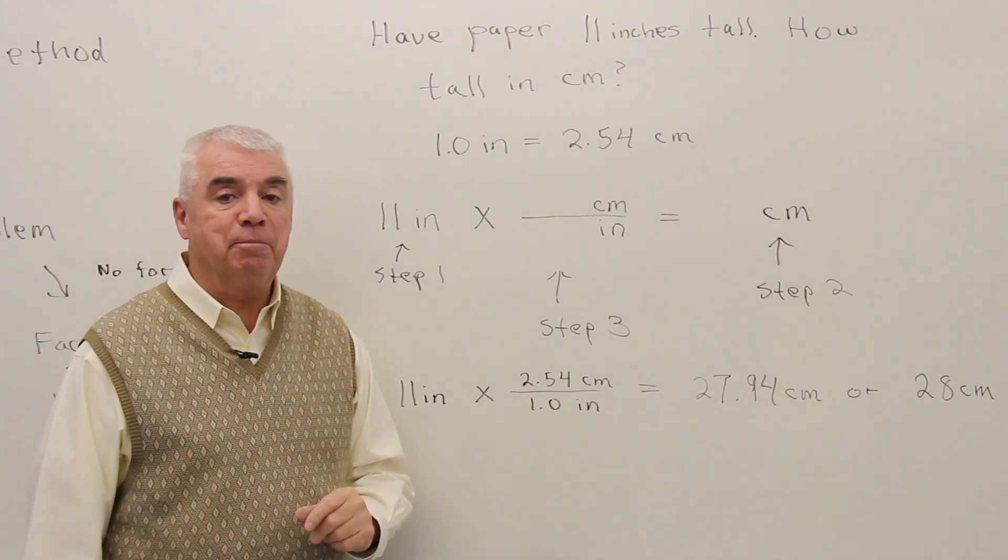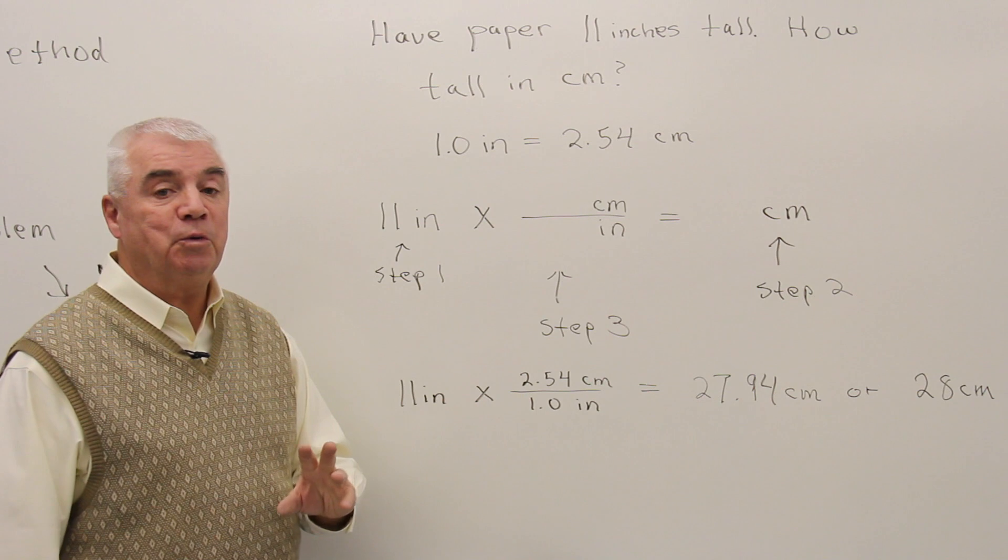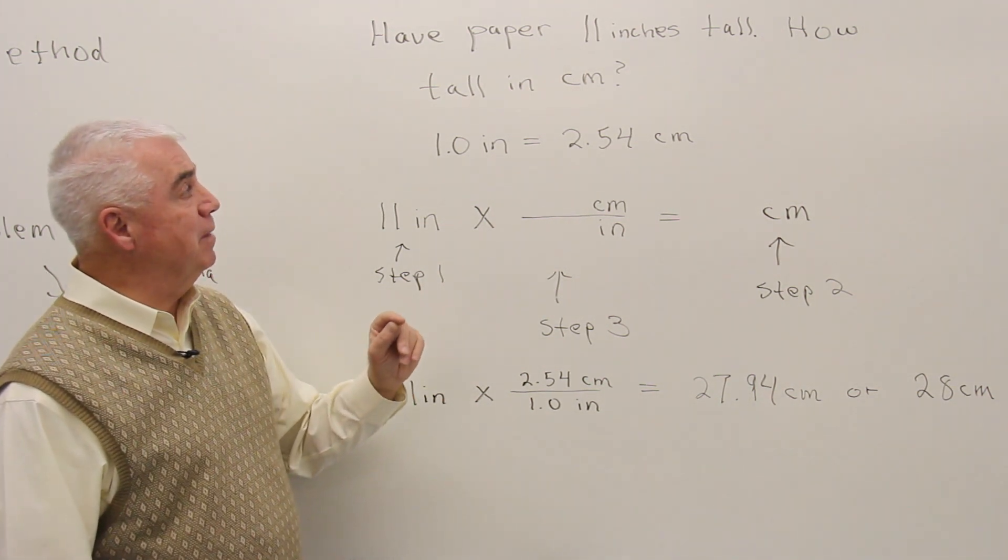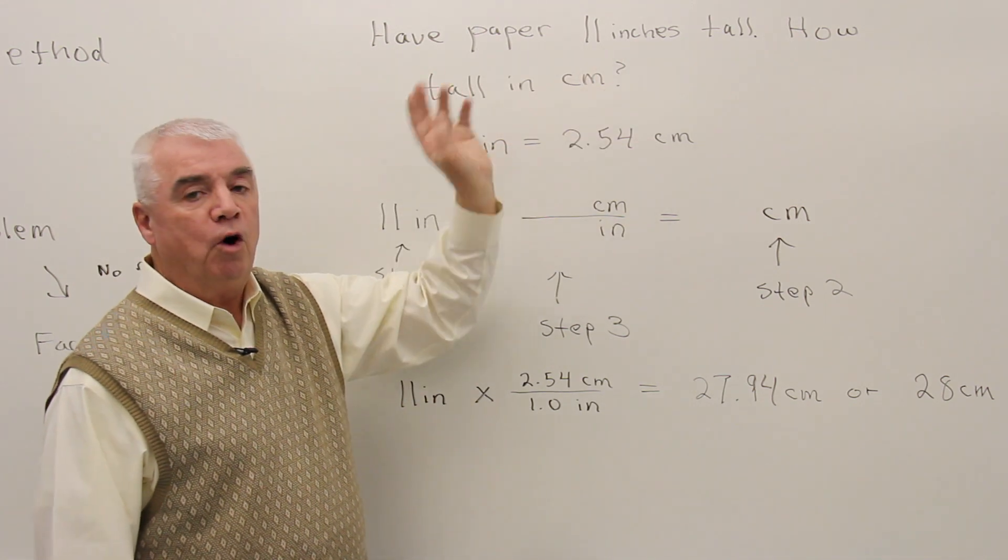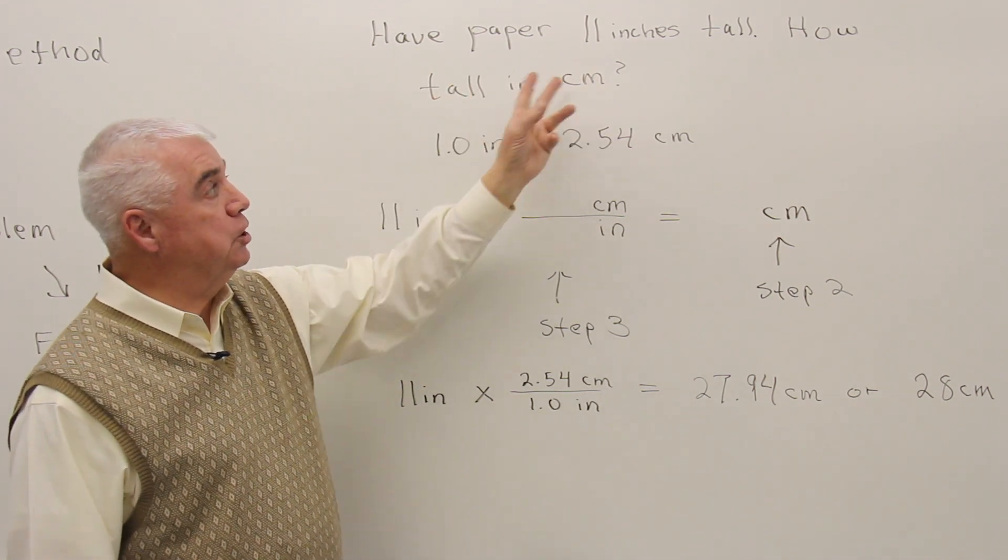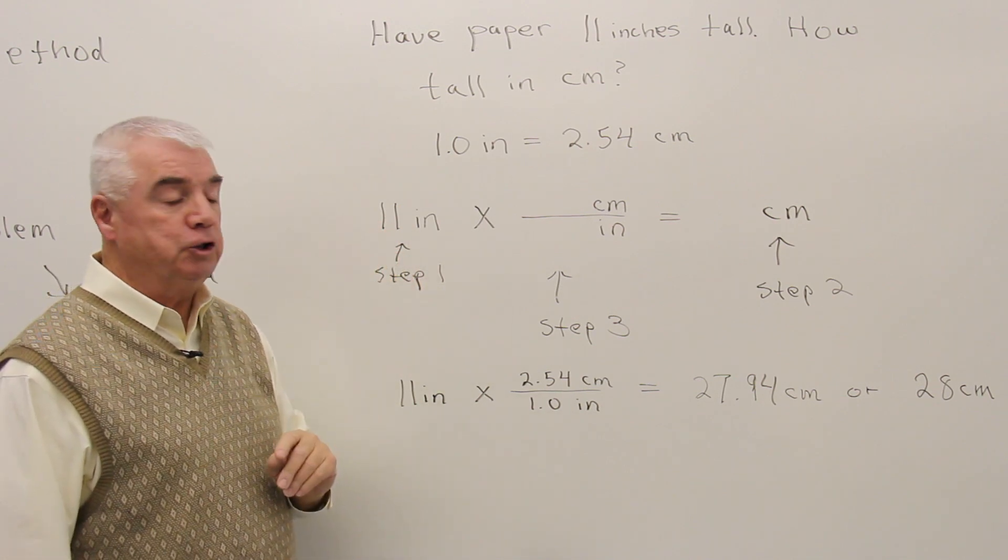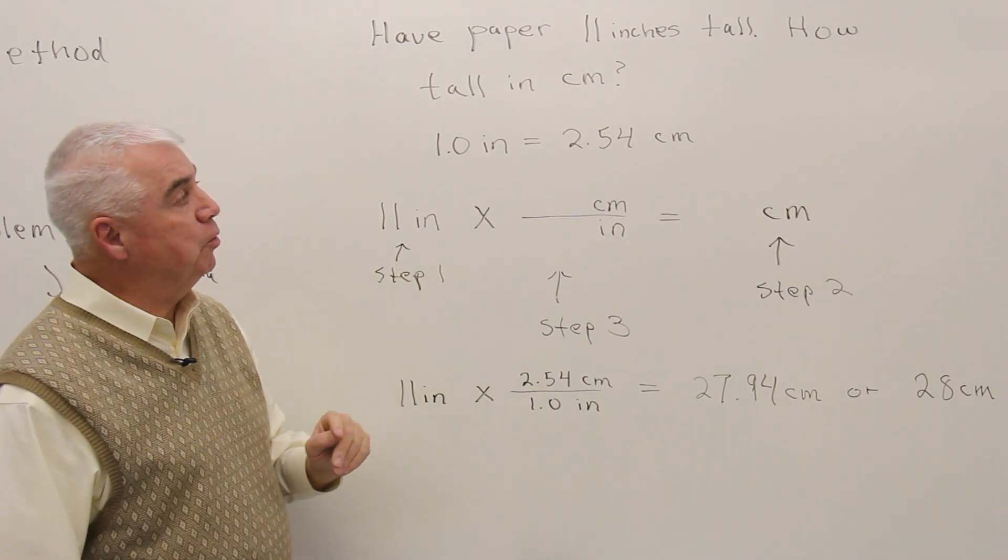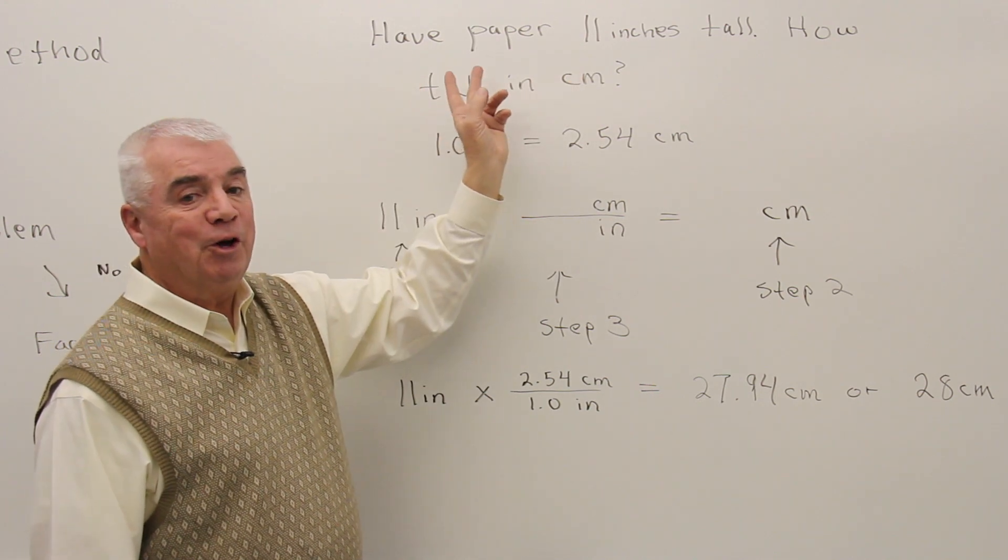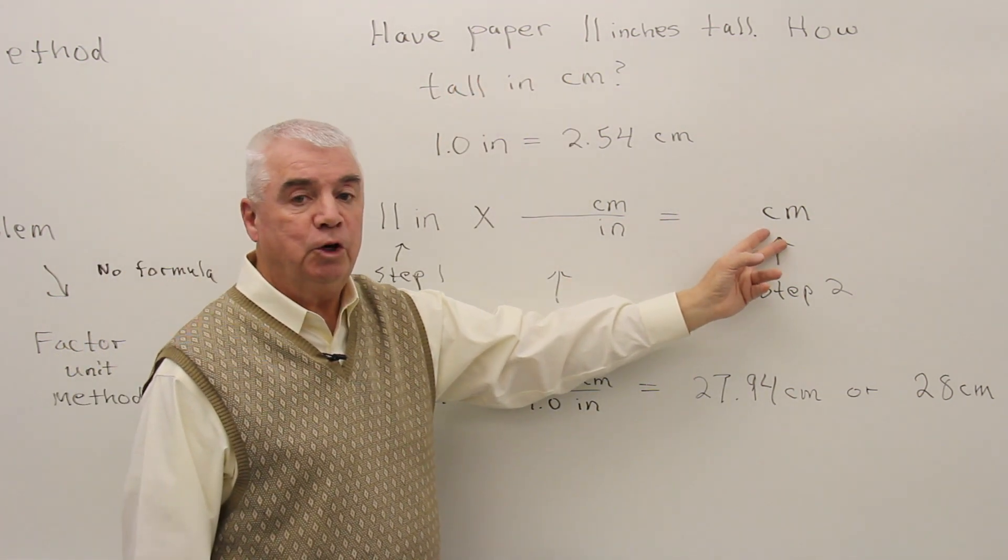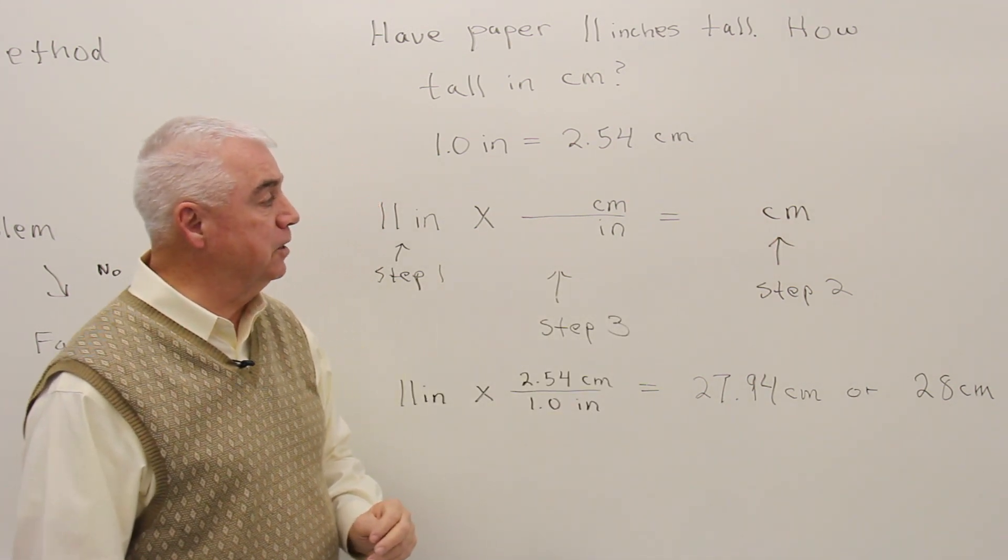The very first step in the factor unit method tells you where to start. And that's one of the strengths in that method. It says, exclude all the words up here and just look for the number that's given. Well, step 1, we'd write down 11 inches. Step 2 is to sort of see where you're going. We'd like to know centimeters. So we'll use that unit on the right-hand side.